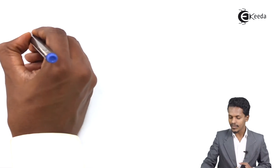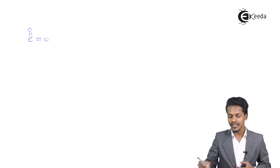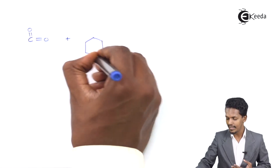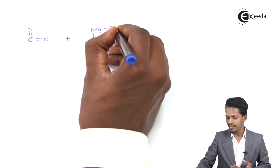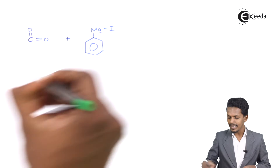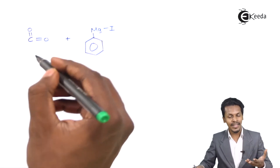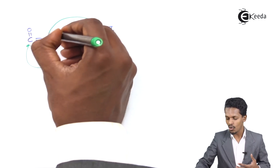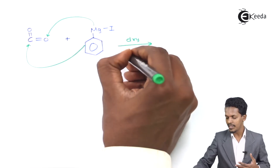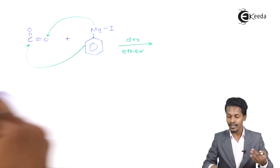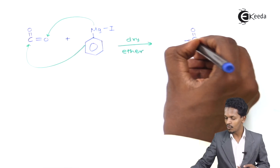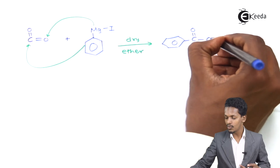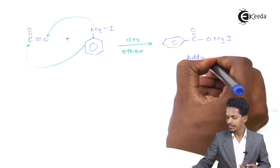In this example we introduce carbon dioxide — CO2 — and react it with a Grignard reagent. The Grignard reagent used here is phenylmagnesium iodide. So the phenyl group attaches to the carbon atom of CO2, while MgI attaches to the oxygen. In the presence of dry ether we get an adduct: C=O bonded to the phenyl ring with O-MgI.